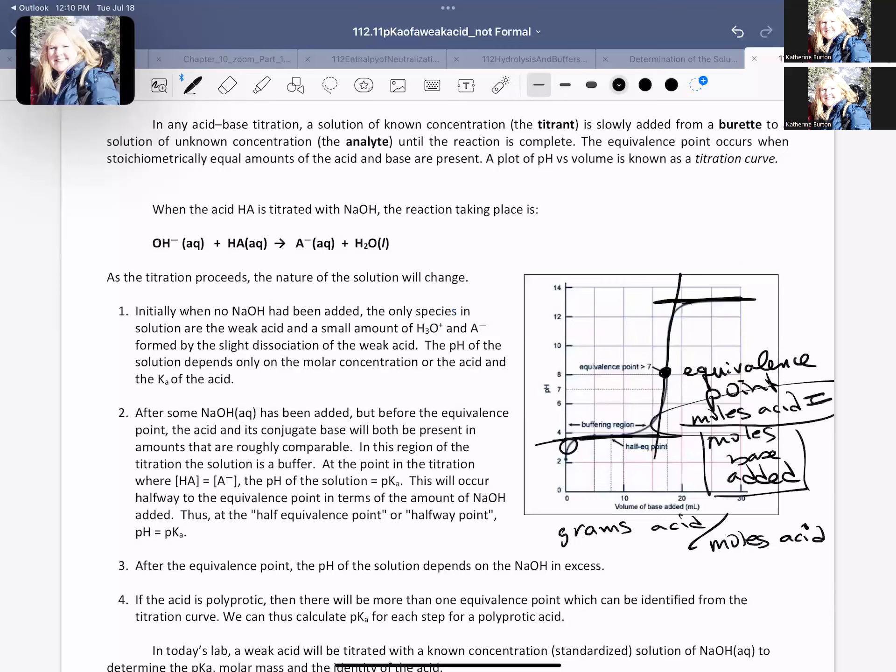The equivalence point is probably not going to be a data point, and you are going to have to add this by hand, where you're going to have to compare where it's flattened at the top, where it's flattened in the buffering region, and halfway in between those two is your equivalence point.